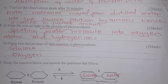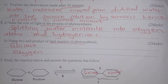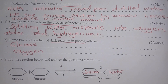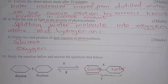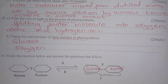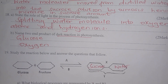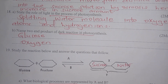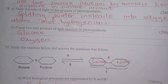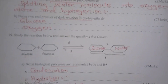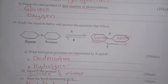State the role of light in the process of photosynthesis — it is responsible for the splitting of water molecules into oxygen atoms and hydrogen atoms. Name the two end products of the dark reactions in photosynthesis — glucose and oxygen.